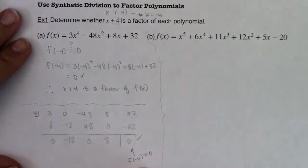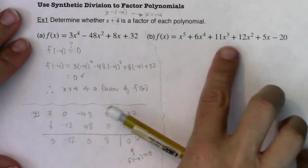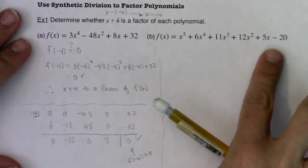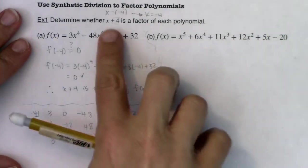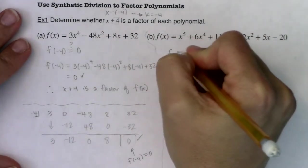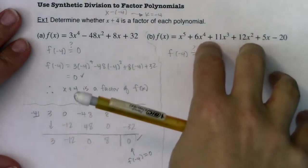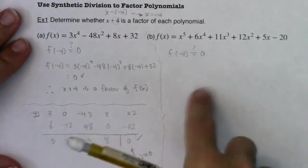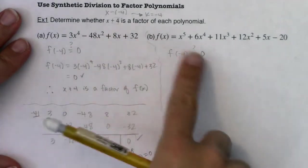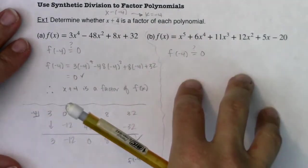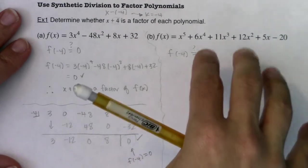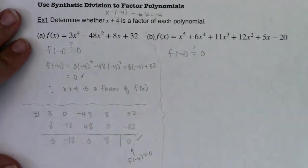Alright, so let's see if I can do part b. Now I've got a longer looking polynomial. If I wanted to see if x plus 4 was a factor, again, I need to find out, is f of negative 4 equal to 0? If it is, then the answer to my question is yes, x plus 4 is a factor. If f of negative 4 is anything other than 0, my answer is no, this is not a factor.